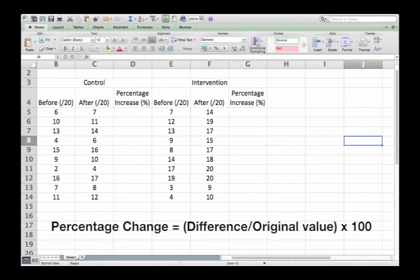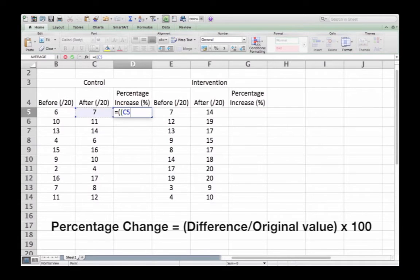Before embarking on the t-test, we're going to complete our data analysis by calculating percentage change, or in this case percentage increase. We do this by calculating the difference—the after minus the before—and dividing by the original starting value, then multiplying by 100.